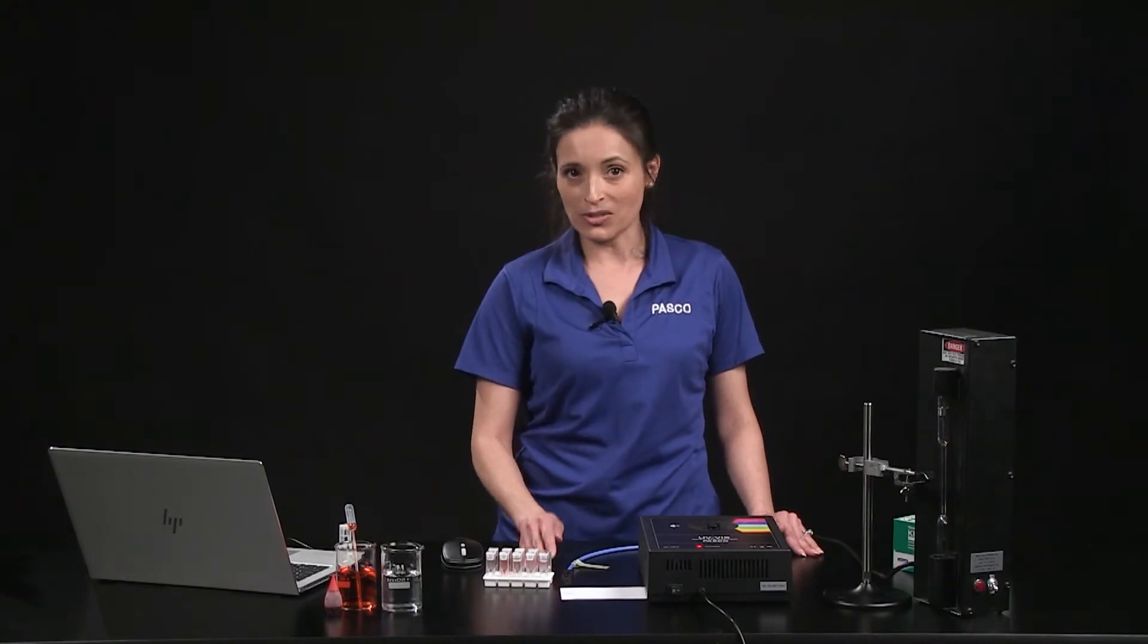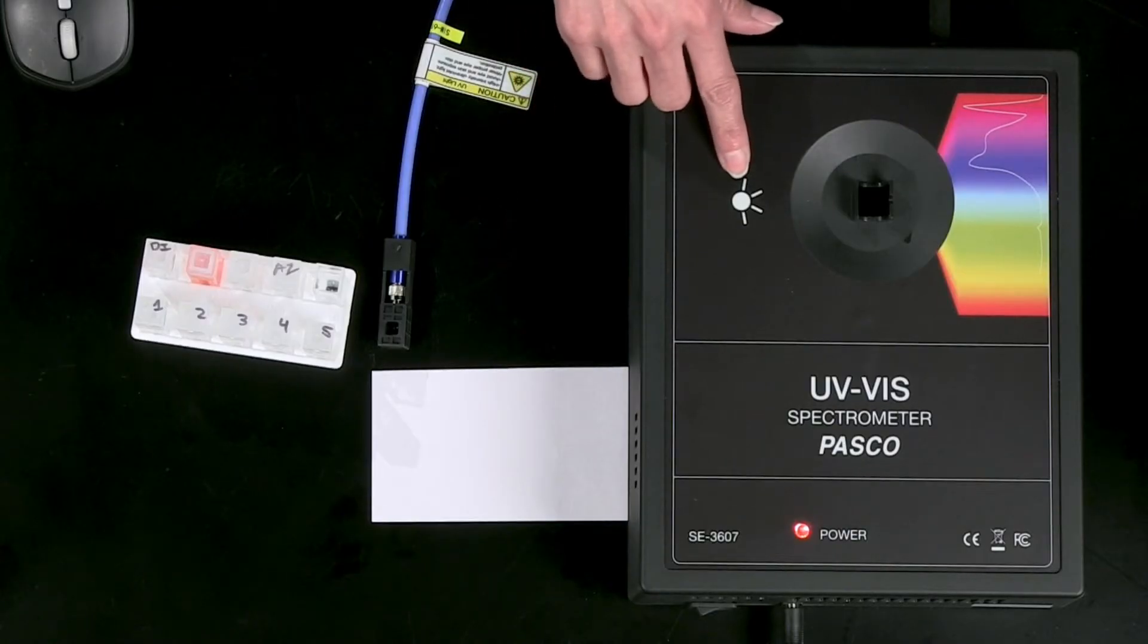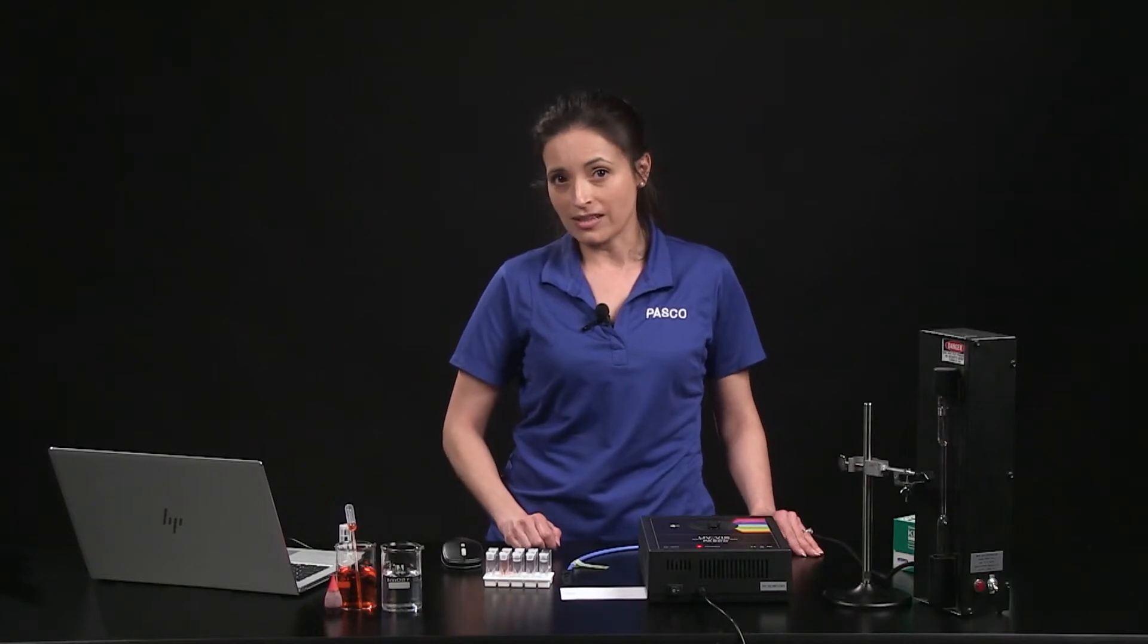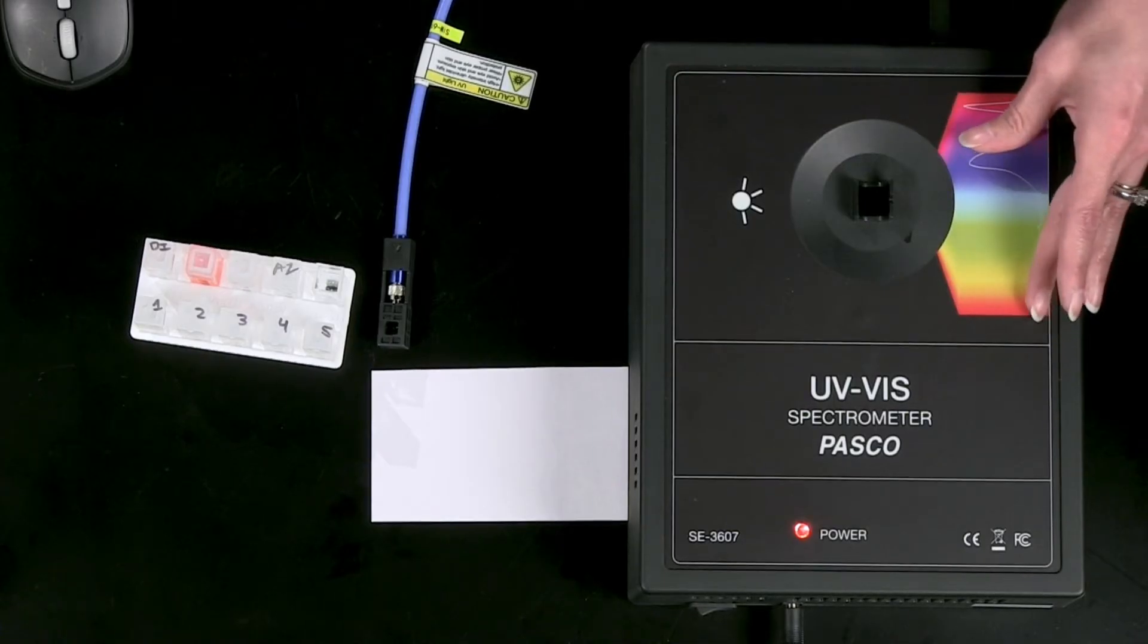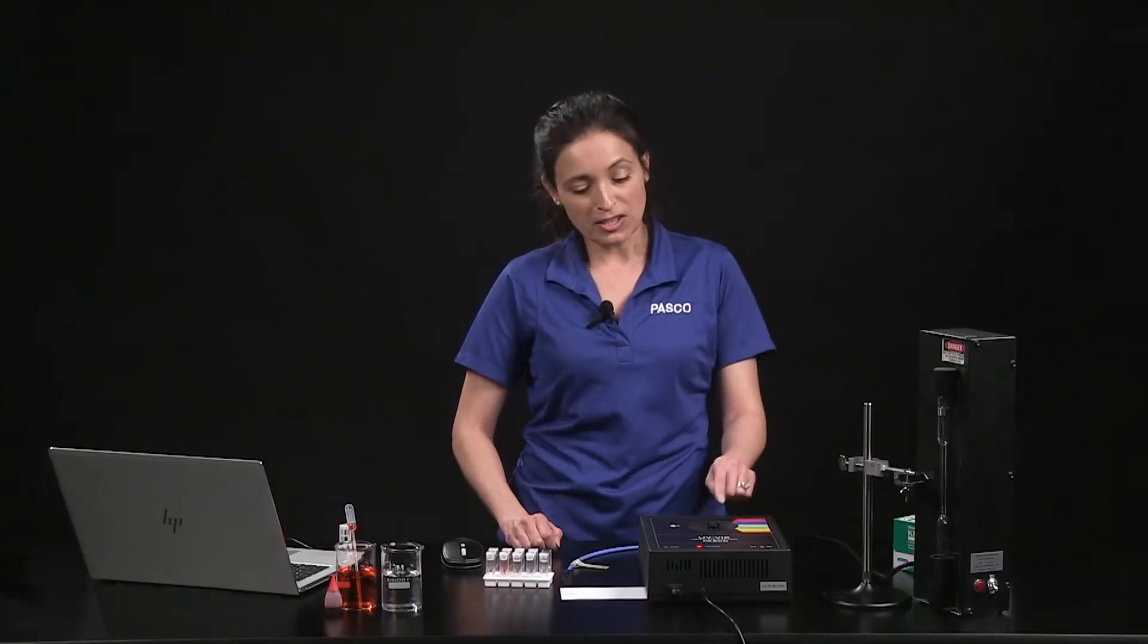The spectrometer's light source is located here, below the white light graphic, and the light detector is located on the side with the colorful visible light graphic. The cuvettes are placed here.